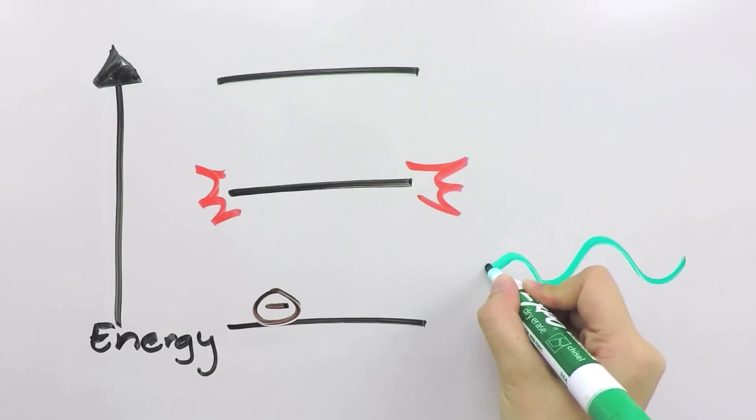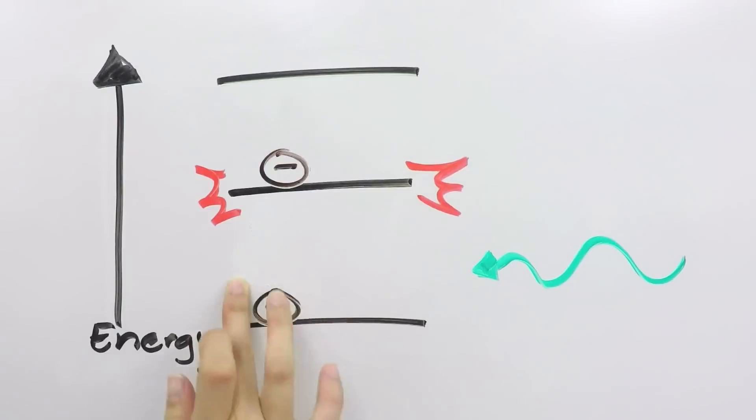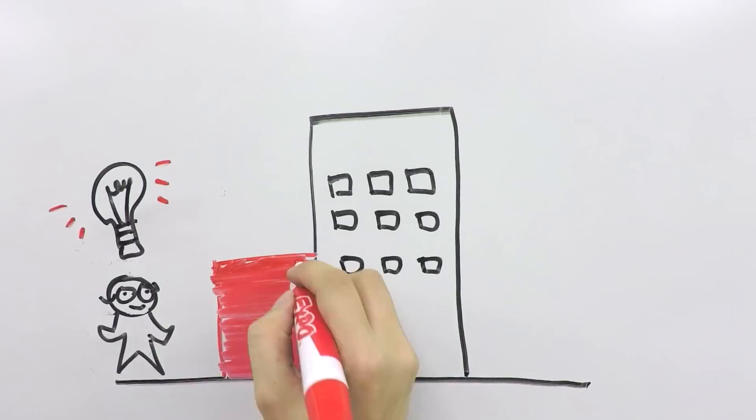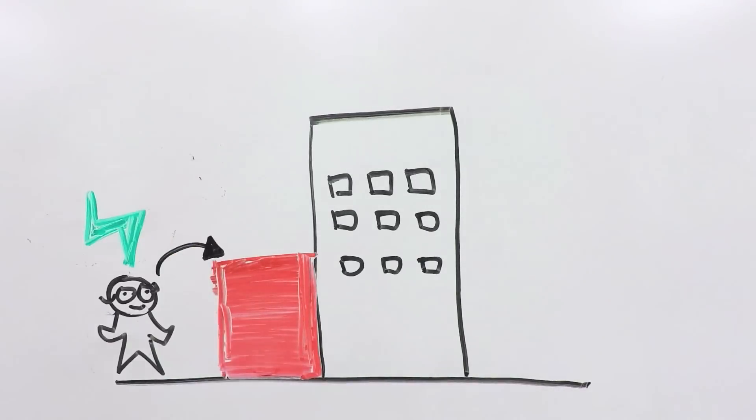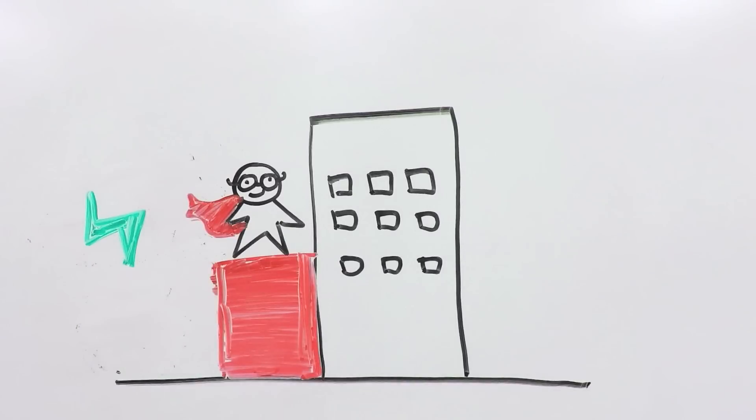First, the material absorbs a lower energy photon, which excites an electron to this intermediate state. Like a step on a staircase, this intermediate state allows the excited electron to hang out a while.